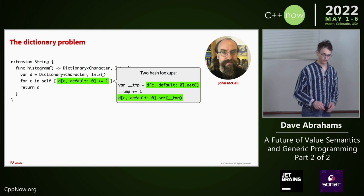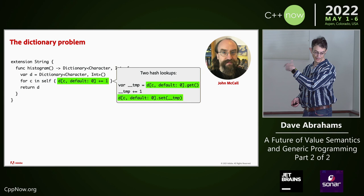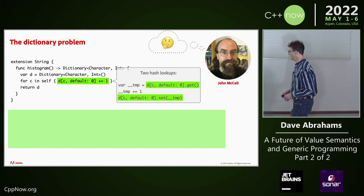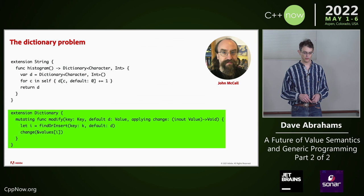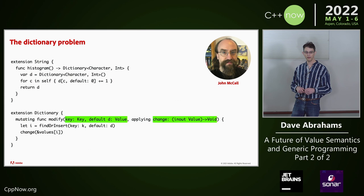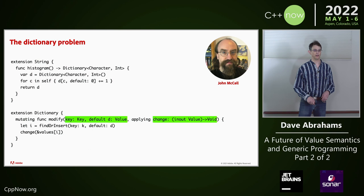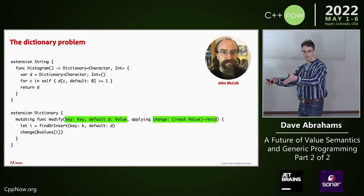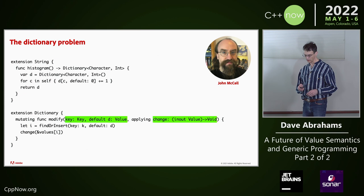John also knew there was a way to avoid that extra work if you have the right methods on dictionary. If you have this modify method on dictionary, you can do it without the extra lookups. This takes the same pair of parameters that indexing does, plus a closure to process the value — it takes it in-out so it can mutate it. What it's going to do is find that location and then pass that value in-out to the closure. We find it, or insert it if it didn't exist, and then change it.